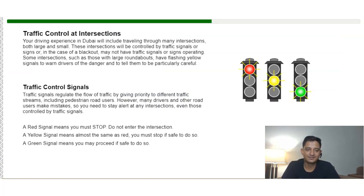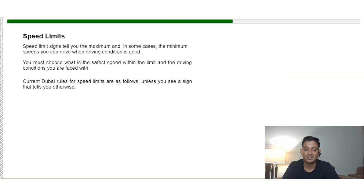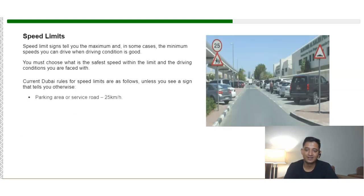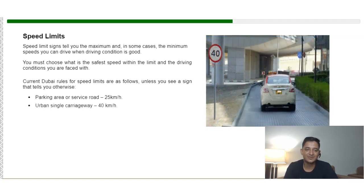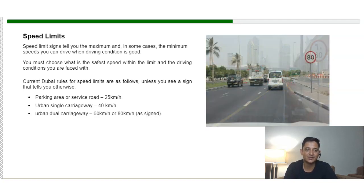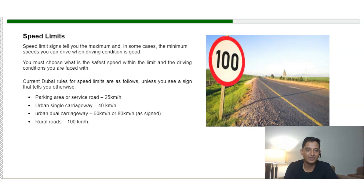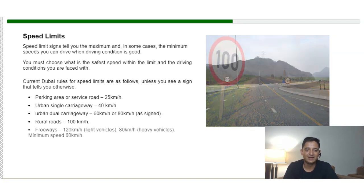Traffic control at intersections: a red signal means you must stop and not enter the intersection. A yellow signal means you must stop if it is safe to do so. A green signal means you may proceed if it is safe to do so. Speed limit signs at signals and junctions tell you the maximum and, in some cases, the minimum speed you can drive. When driving conditions are good, you must choose the safest speed within the posted limit.